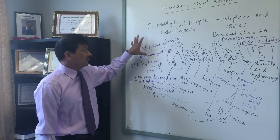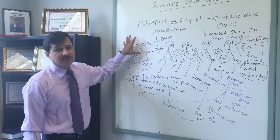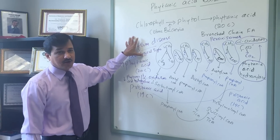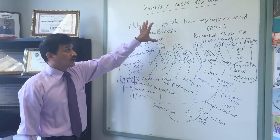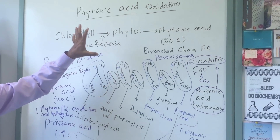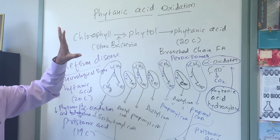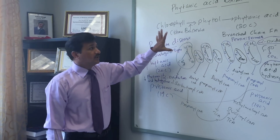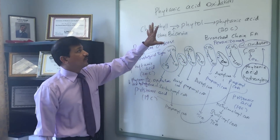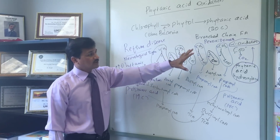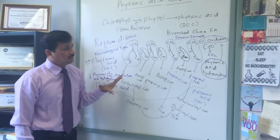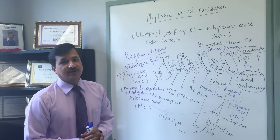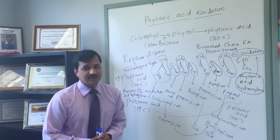In Refsum's disease, patients need to avoid consumption of dairy products, milk and milk products, and consumption of ruminant meat has to be decreased. This is all about phytanic acid oxidation — alpha oxidation followed by beta oxidation. I hope you understood phytanic acid oxidation. Thanks for watching.